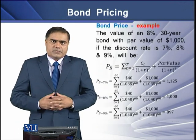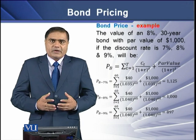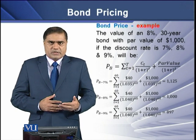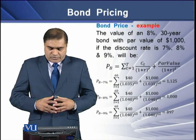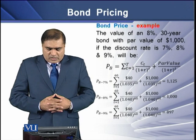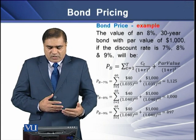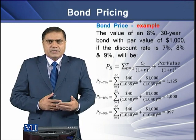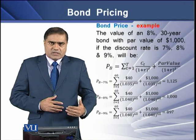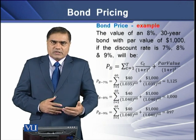Now, how do we compute the bond price? We have an example: the value of an 8%, 30-year bond with a par value of $1,000. If the discount rate is 7%, 8%, and 9%, what will this bond be valued at? Using the present value formula, we get $1,125 at a 7% discount rate, $1,000 at an 8% discount rate — which equals our coupon rate — and $897 at a 9% discount rate.